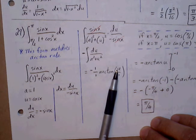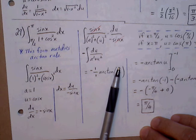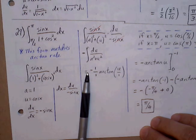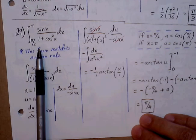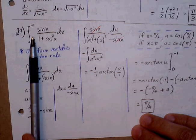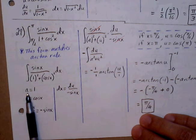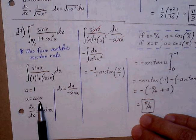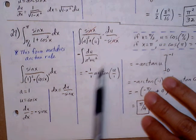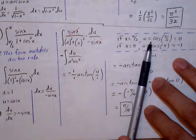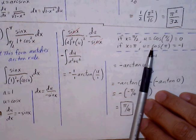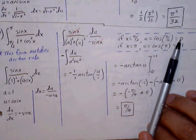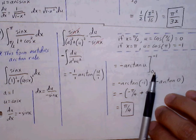I hold on to the u value to plug in the upper and lower bounds, keeping track of the negative as part of the antiderivative. Let's convert our bounds, which are in terms of x, using u = cos(x). Plug in π/2 for x: cos(π/2) = 0. Plug in the upper bound π: cos(π) = −1. So our new upper bound is −1 and our new lower bound is 0.